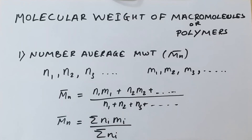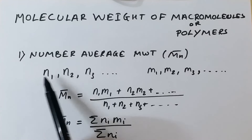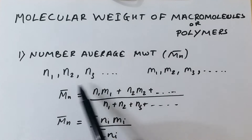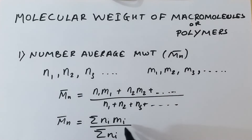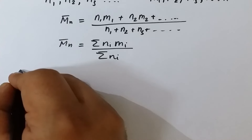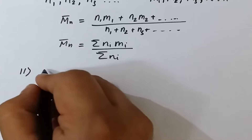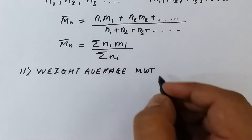This is the general formula to calculate the number average molecular weight of any polymer. Where n1, n2, n3 are the different numbers of polymer molecules and m is the mass. Given the number and mass, we can easily find out the number average molecular weight of the polymer. Moving on to the second type of molecular weight, that is weight average molecular weight.